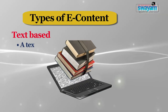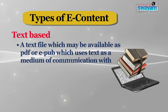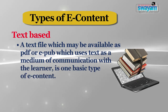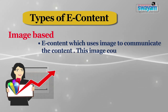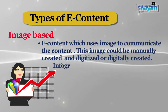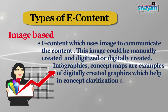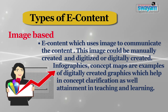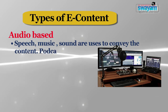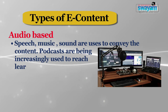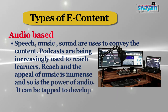The first type is text-based — a text file available as a PDF or EPUB which uses text as the medium of communication with the learner; it is the basic type of e-content. The second is image-based, using images to communicate content — either manually created and digitized or digitally created. Infographics and concept maps are examples of digitally created graphics that help in concept clarification and attainment. The third is audio-based, which includes speech, music and sound used to convey content. Podcasts are increasingly used to reach learners, and the power of audio can be tapped to develop e-content.